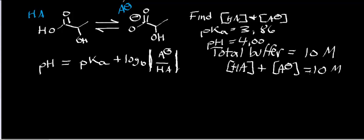The reason we need that information is because if we're asked to solve for HA and A- using just the Henderson-Hasselbalch equation, we know the pH and we know the pKa, but we'd have two unknowns. You can't solve for two unknowns unless you have at least two equations. This equation — HA plus A- concentration equals 10 molar — is called the mass balance equation.